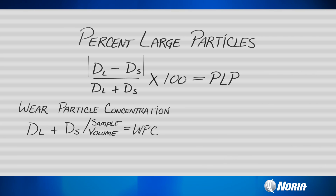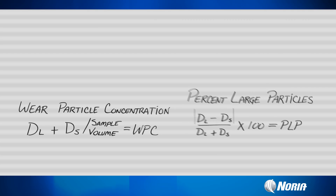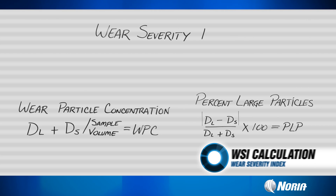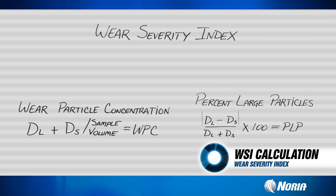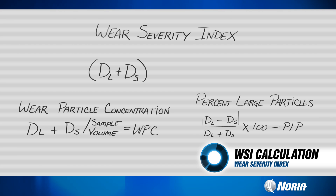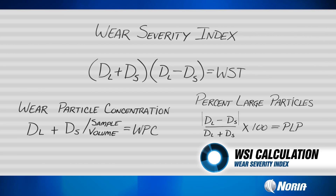The third piece of information we can derive through calculations is the wear severity index, or WSI. WSI is calculated by taking the sum of ferrous large and ferrous small, multiplied by the difference of ferrous large and ferrous small. That gives you the wear severity index.